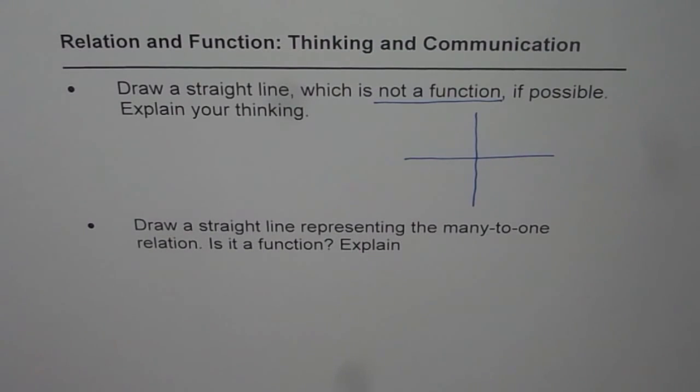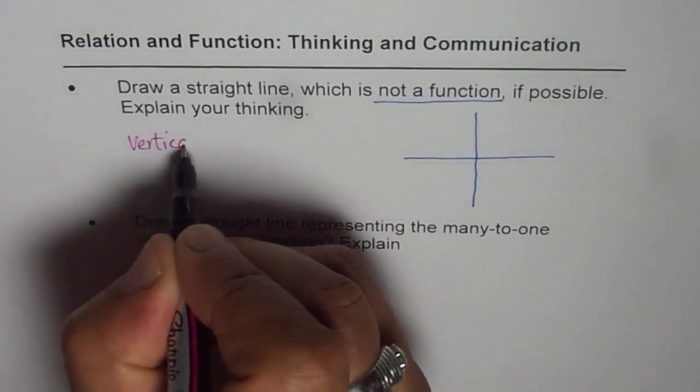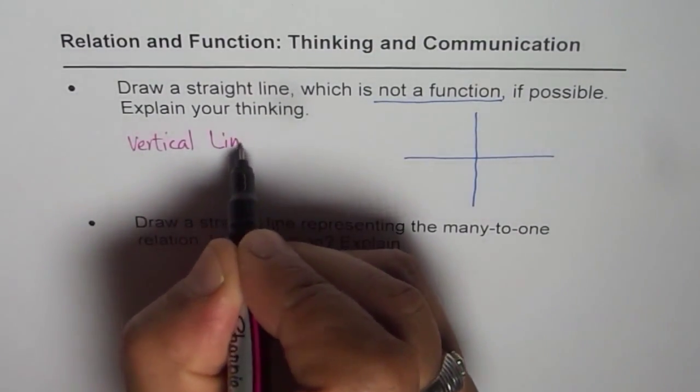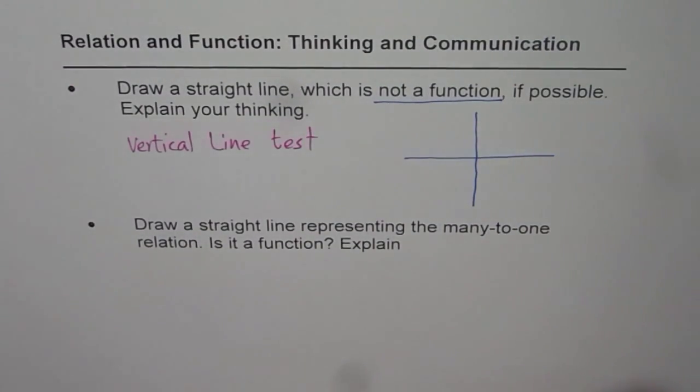Whenever you're checking whether a graph is a function or not, the first thing you would check is a vertical line test. Which really means that if you draw a vertical line, then two points on the graph should not be on that line.